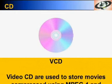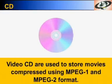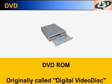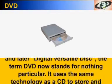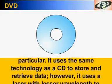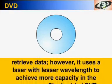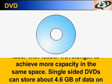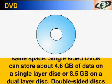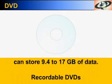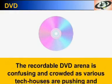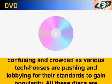Video CDs are used to store movies compressed using MPEG-1 and MPEG-2 format. Originally called Digital Video Disc and later Digital Versatile Disc, the term DVD now stands for nothing particular. It uses the same technology as a CD to store and retrieve data. However, it uses a laser with lesser wavelength to achieve more capacity in the same space. Single-sided DVDs can store about 4.6 GB of data on a single layer disc or 8.5 GB on a dual layer disc. Double-sided discs can store 9.4 to 17 GB of data. The recordable DVD arena is confusing and crowded as various tech companies are pushing for their standards to gain popularity.